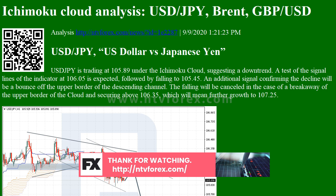GBP/USD is trading at 1.2953 under the Ichimoku cloud, suggesting a downtrend. A test of the lower border of the cloud at 1.3045 is expected, followed by falling to 1.2720. An additional signal confirming the decline will be a bounce off the upper border of the descending channel.